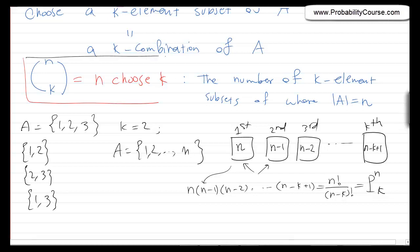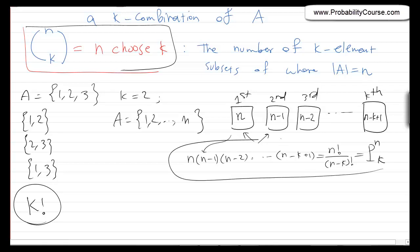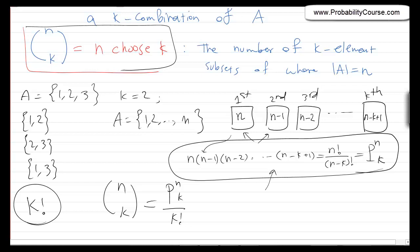Here ordering matters, but in n choose k, ordering does not matter. How do we solve this? If I have k elements, in how many ways can I order them? k factorial — because the first element can be any of the k elements, the second is k minus 1, and so on. So if I have k elements, I can order them in k factorial ways. I am overcounting the number of k subsets, because for any k subset I am counting it k factorial times. In other words, if I divide P(n,k) by k factorial, I obtain n choose k. Using the formula, it becomes n factorial divided by k factorial times (n minus k) factorial.